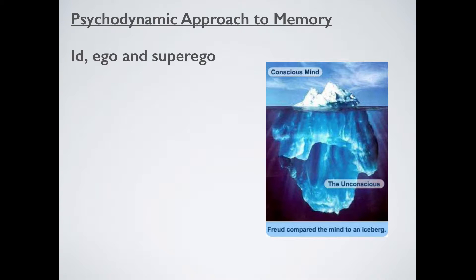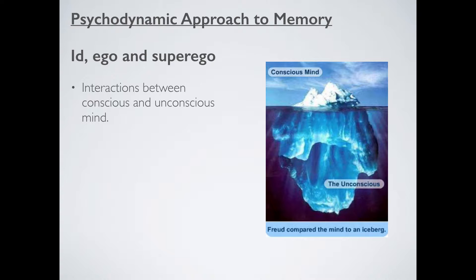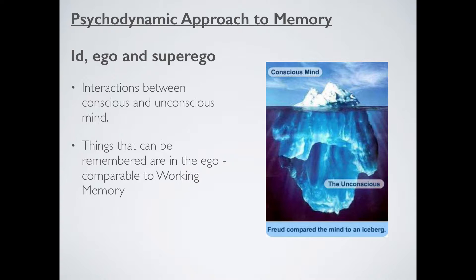If we think in terms of id, ego, and superego — remember this is basically what Freud's entire theories about psychology are based around — then we can imagine that memory must obey these rules. So memory must be, similar to all behaviour, an interaction between the conscious and the unconscious mind. As a quick bit of revision: the ego, that's 'I' in Latin, the ego is you, so that's your conscious mind.